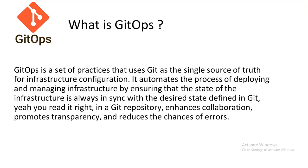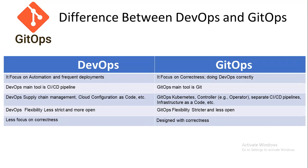The difference between DevOps and GitOps: DevOps focuses on automation and frequent deployments, while GitOps focuses on correctness — doing DevOps correctly. DevOps' main tool is the CI/CD pipeline, while GitOps' main tool is Git. In DevOps, supply chain management uses cloud configuration as code, whereas GitOps uses Kubernetes controllers, operators, and separate CI/CD pipelines with infrastructure as code.